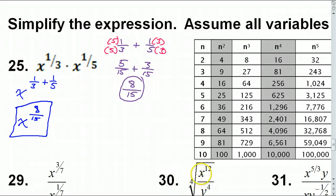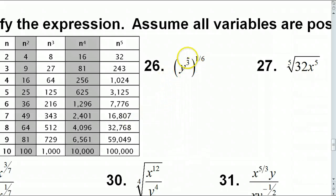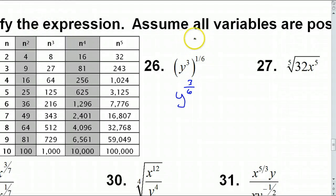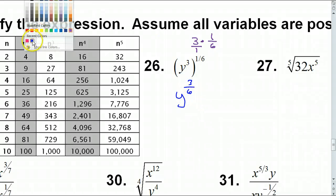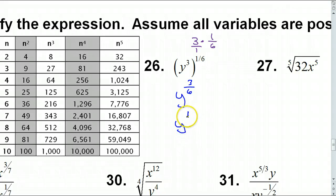If the original problem had been in radical form we would have rewritten the answer in radical form. For number 26, when you have a power raised to a power you multiply, so this is going to be Y to the 3/6 power. That's 3 times 1/6, which is 3/1 times 1/6 — numerator times numerator, denominator times denominator — giving 3/6, which reduces to Y to the 1/2 power. Since it started in exponent form we leave it in exponent form.